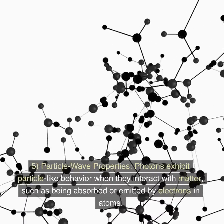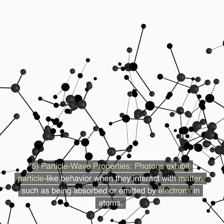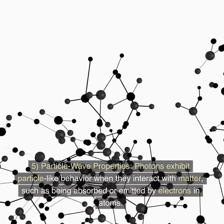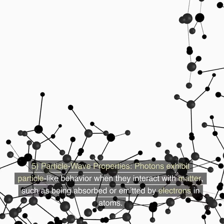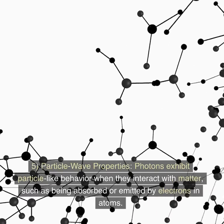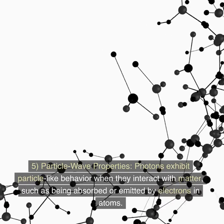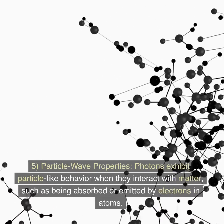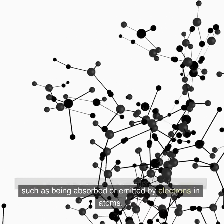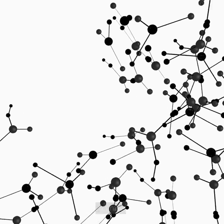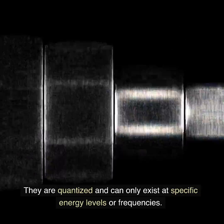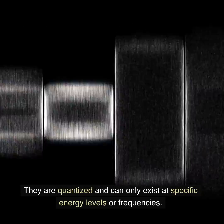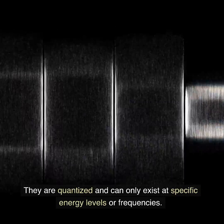5. Particle-wave properties — photons exhibit particle-like behavior when they interact with matter, such as being absorbed or emitted by electrons in atoms. They are quantized and can only exist at specific energy levels or frequencies.